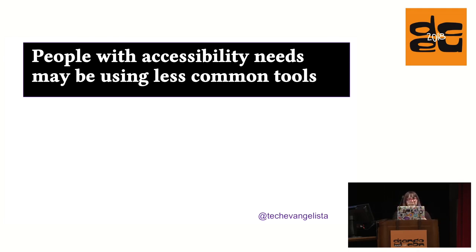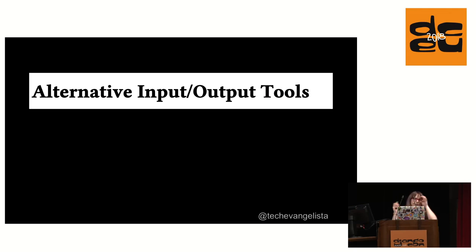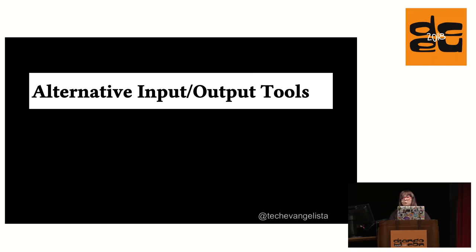People with accessibility needs may also be using less common tools because of the difficulty they have with the common ones. These are generally called alternative input or output tools. There are basic ones like foot pedals instead of mice. There are also touch screens that fit over other screens, eye tracking devices that follow how your eyes move, and braille displays that print out braille for people to touch — all different ways people translate the web into something they can digest.